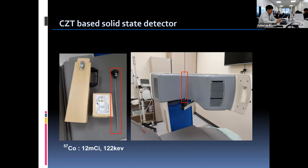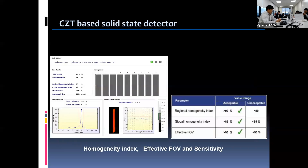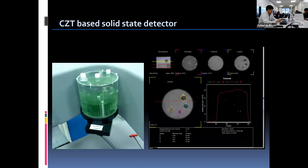For the daily QC test, a cobalt rod source is fixed onto the holder that is attached to the machine, and it is positioned vertically to cover the entire active area of the detector. Results are automatically generated once the acquisition is complete. The report shows the homogeneity index, effective sensitivity, and spatial resolution. The QC process is becoming simplified and automated in modern clinical imaging systems, which is convenient for the end user. The QC process is also required to be done on this machine, and the principle of image analysis is the same as for other conventional SPECT cameras.